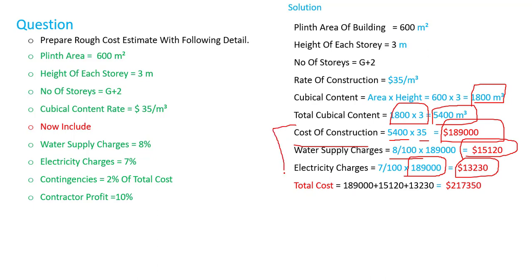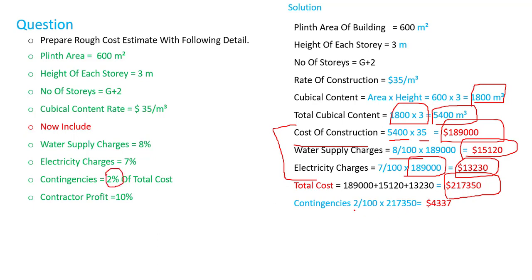The total cost equals the cost of construction plus water supply charges plus electricity charges, coming to $216,735. Now we add contingencies at 2%: 2 divided by 100 multiplied by the total cost, giving us $4,347.